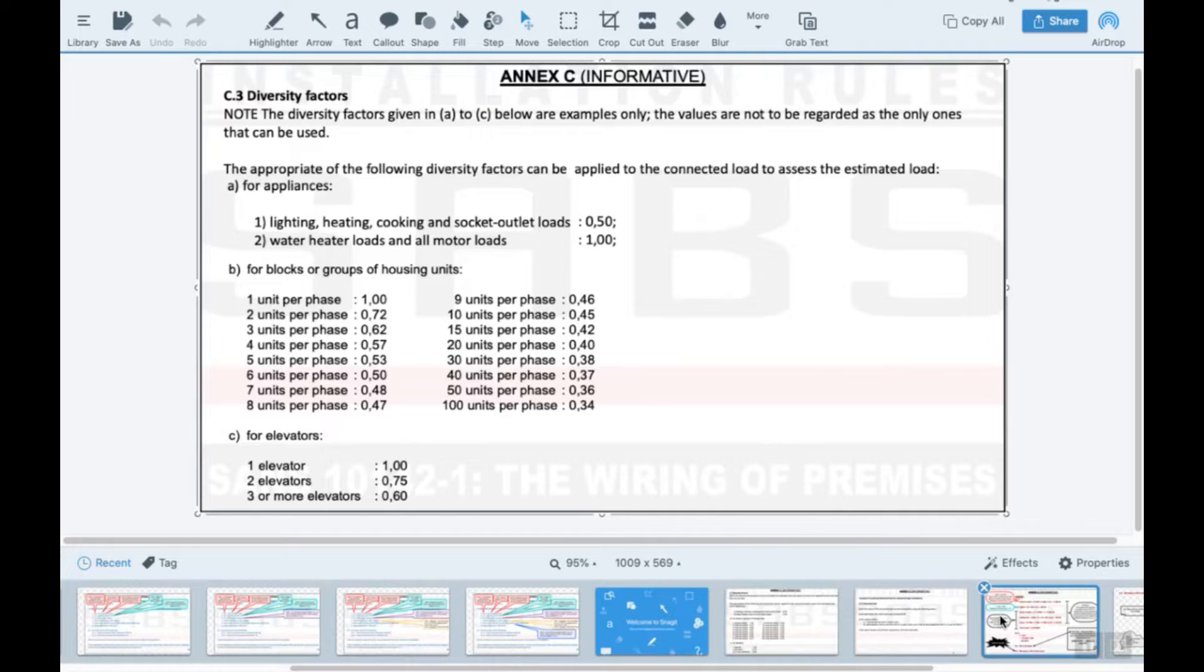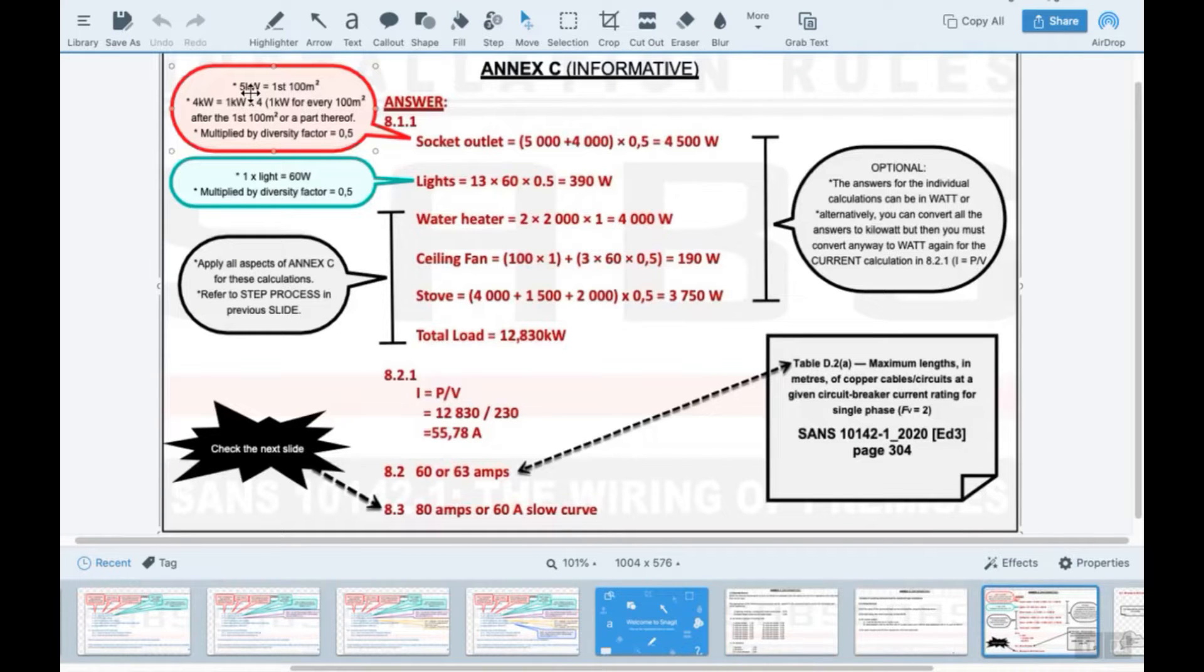That is for plugs. Where do we find that? What does it look like? It says five kilowatt for the first hundred square meter, then it would be four kilowatt, which means one kilowatt for every hundred square meter and a part thereof. So the part thereof would be the nine point whatever it was, and then multiplied by the diversity factor.